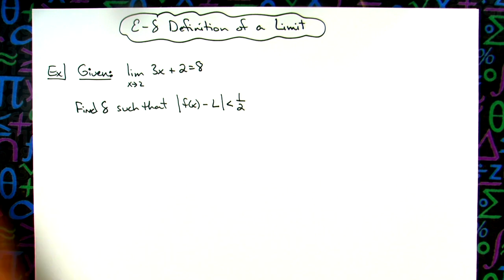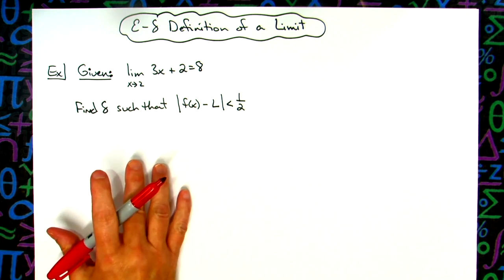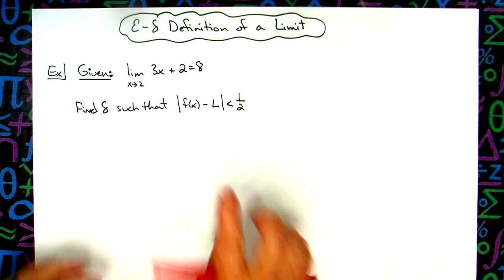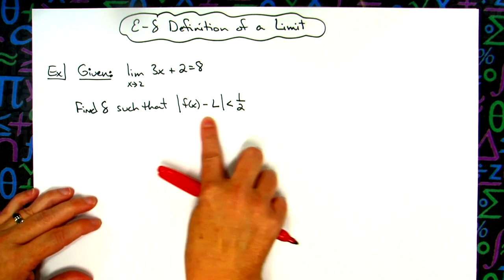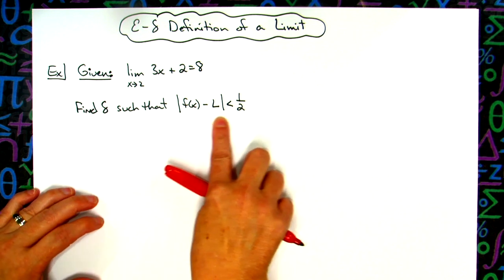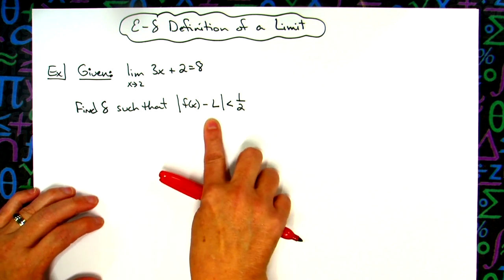Now, when the question is written as it is here, it makes the question really easy in the sense that they give you the portion of that definition of a limit, that epsilon delta definition of a limit that you need to know to be able to work this out.